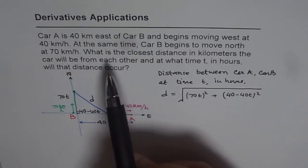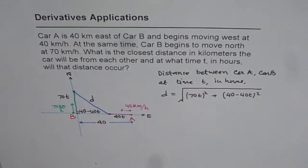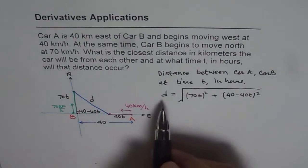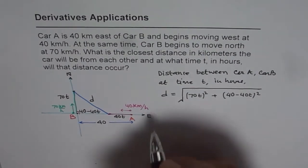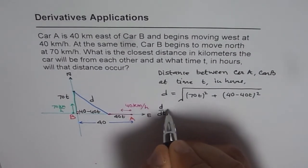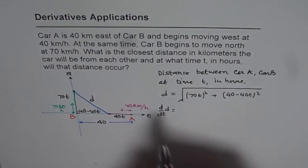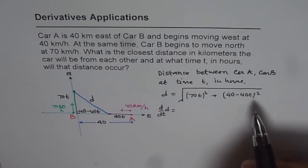The second part of this question is, what is the closest distance in kilometers the cars will be from each other? To find the closest distance, we should differentiate this distance with respect to time. So when we differentiate, dD/dT of D is equal to what? Differentiate the whole thing. So when you differentiate the whole thing, what will you get?